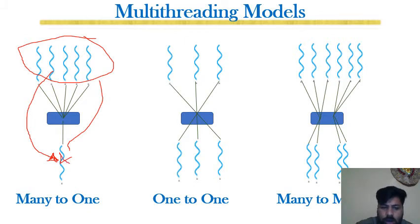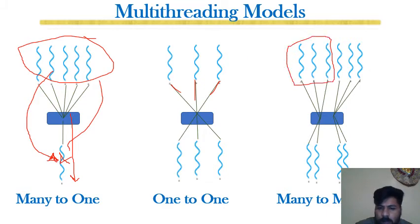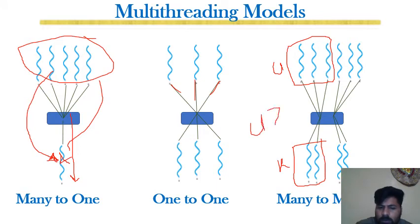Looking at the diagrams: in the many-to-one thread model, many user threads are mapped to a single kernel thread — if that kernel thread executes a blocking call, all other threads stop. In the one-to-one model, every user thread has a corresponding kernel thread. In the many-to-many model, multiple user threads are mapped to multiple kernel threads, with the number of user threads being greater than or equal to kernel threads — this property must be ensured to keep the model realistic.